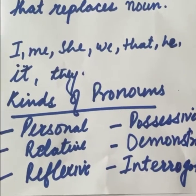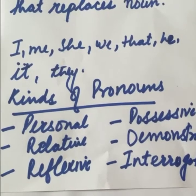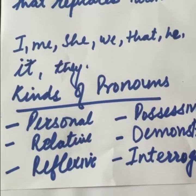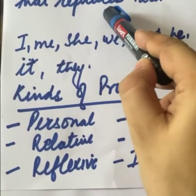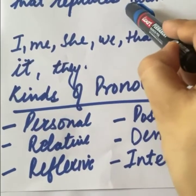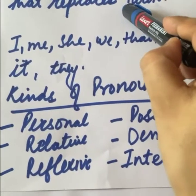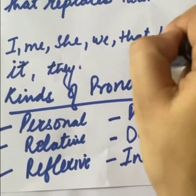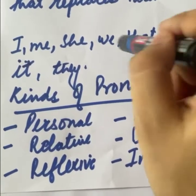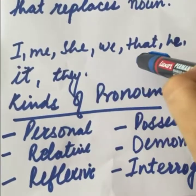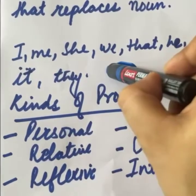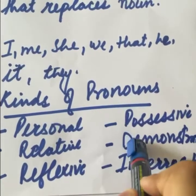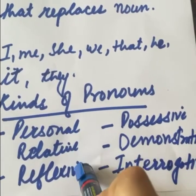Good morning everyone! Today we'll be doing the revision for pronouns. A pronoun is a word that replaces a noun — pronoun woh hota hai jo noun ki jagah aata hai. For example, if we have a name, we use he or she in its place. If it's a thing, we use 'it'. So I, me, she, we, that, he, it, they — these are all pronouns.